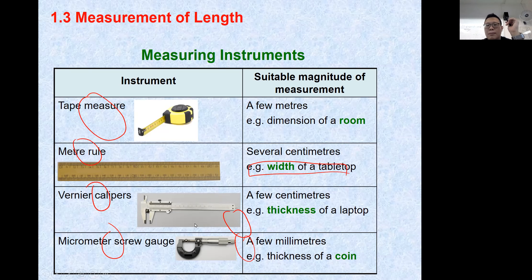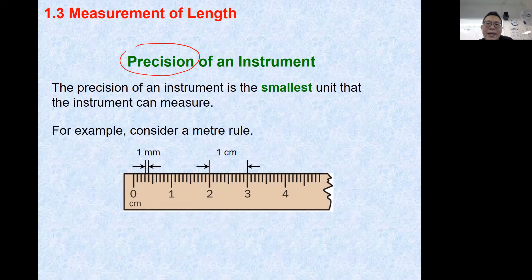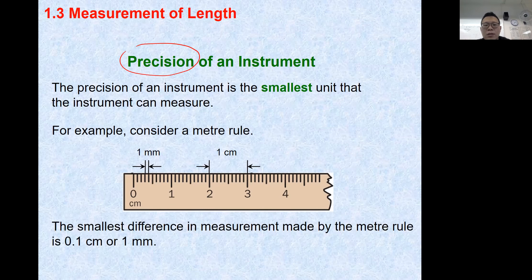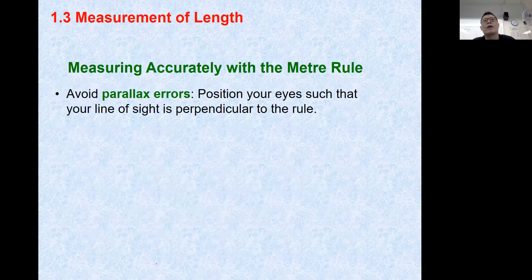Before we start on instruments, one important thing to note is the precision of the instruments - this is essentially the accuracy of the instrument, meaning how detailed a measurement you can take. For example, using a ruler, the smallest accuracy or detail you can measure is 0.1 cm, which we commonly call 1 decimal place in cm. That is the smallest number you can measure using a meter rule.